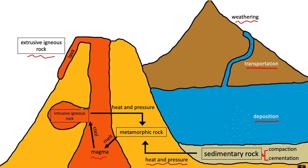The intrusive igneous rock could undergo heat and pressure and turn back into metamorphic rock, or the extrusive igneous rock, subject to weathering, could start the cycle again — turning into sediment, being transported, and so on.